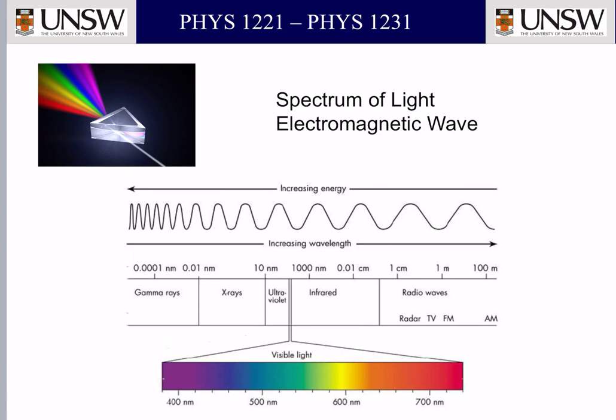Gamma ray is dangerous. If you go out into the universe, there might be even higher energies than gamma radiation. Luckily, here on Earth, we are largely protected from that by our atmosphere.